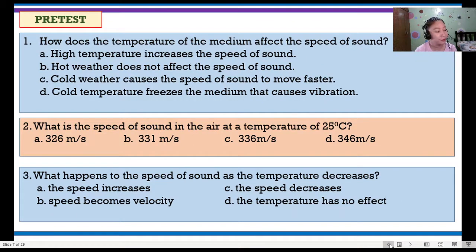Now, once you're done answering the pre-test, let's now check. Answer for number 1 pre-test is letter A. High temperature increases the speed of sound. For number 2, the correct answer is letter D. 346 meter per second. Later, as we go along our discussion, you will understand how we computed that 346 meter per second.